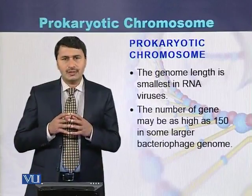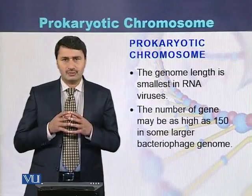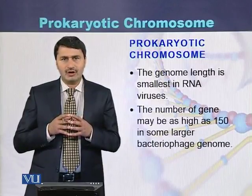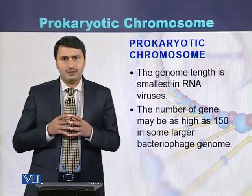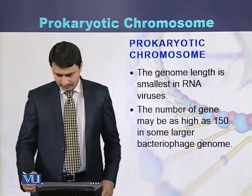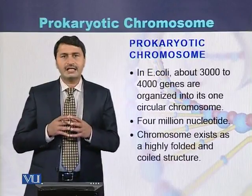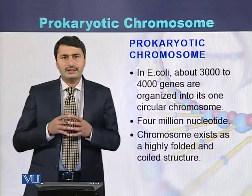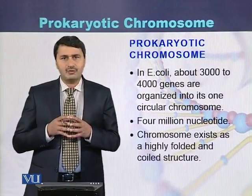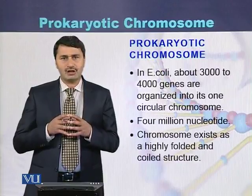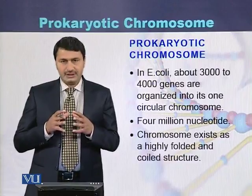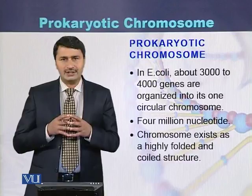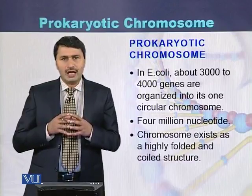The genome length of the prokaryote is smallest, particularly in case of RNA viruses, where the number of genes can be up to 150. While in case of E. coli, there can be 3000 up to 4000 genes organized on the genome. There are 4 million nucleotides in the E. coli chromosome.